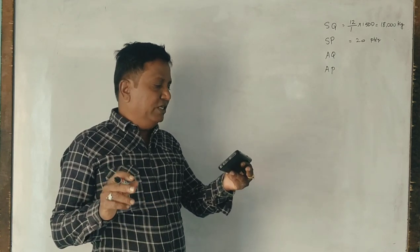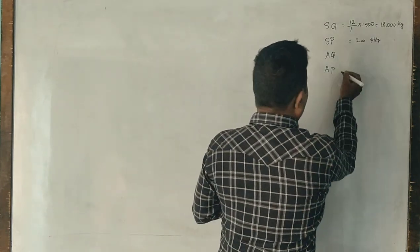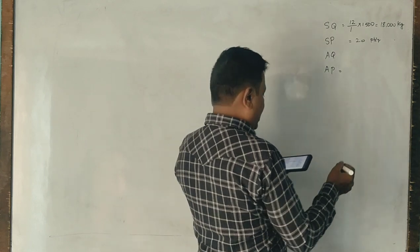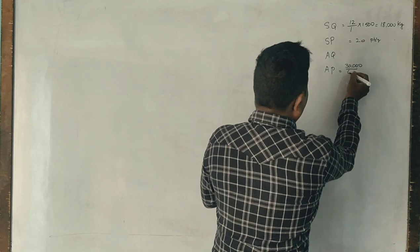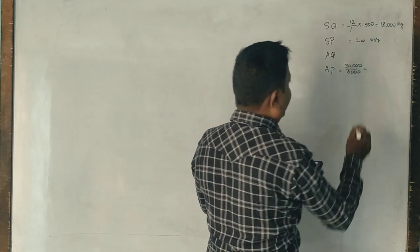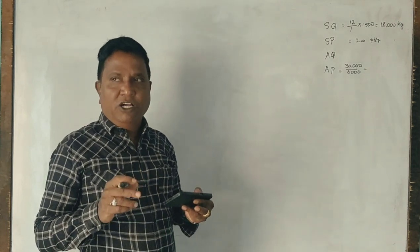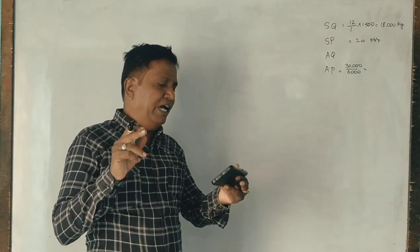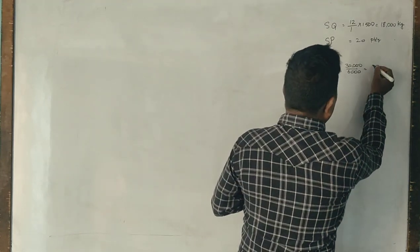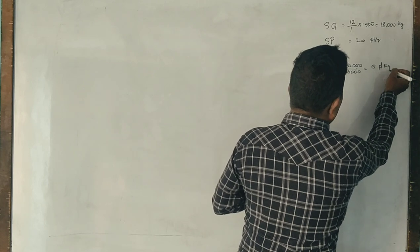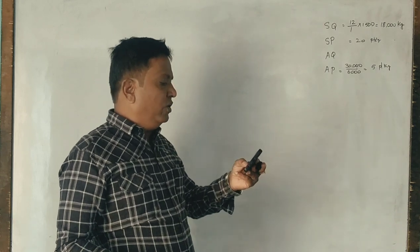Materials purchased is 6,000 kg. To calculate actual price: you pay 30,000 rupees for purchasing 6,000 kg of materials. Materials purchased is 6,000 kg. How much you paid for it? Value of material purchase is 30,000. So the per unit is 5 rupees per kg. So actual price also becomes 5.